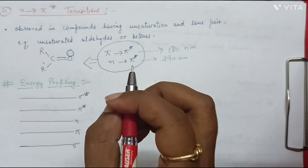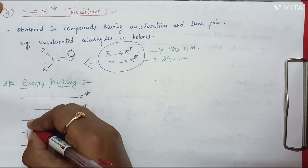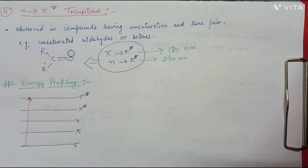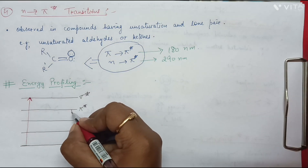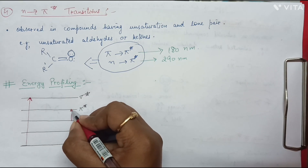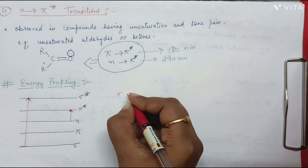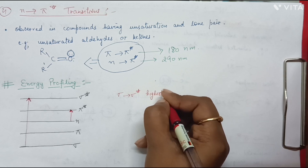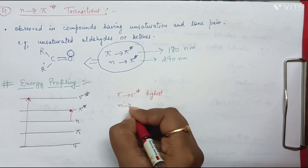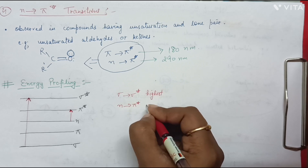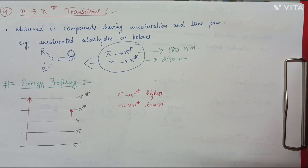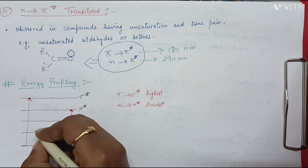From this picture, it is very clear that from sigma to sigma star we have the highest energy gap, and from n to pi star we have the lowest energy gap. So sigma to sigma star energy gap is highest, and n to pi star energy gap is lowest.